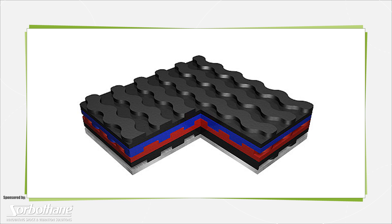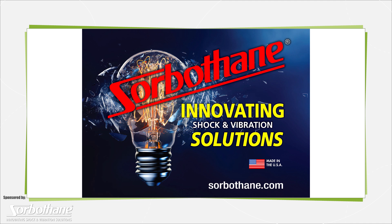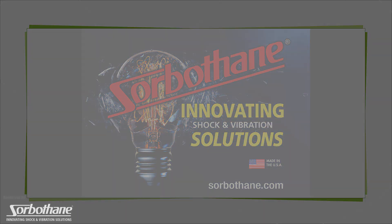Formats abound. One includes layered blocks of Sorbathane that interlock to let design engineers customize vibration damping assemblies. The modular components include steel base plates to keep their shape and boost column strength. For more information visit motioncontroltips.com or sorbathane.com.